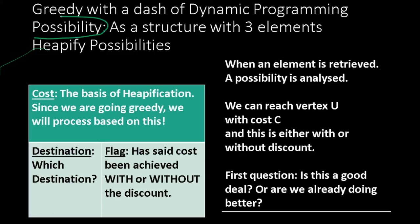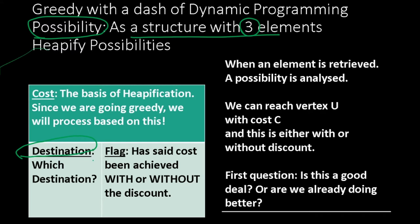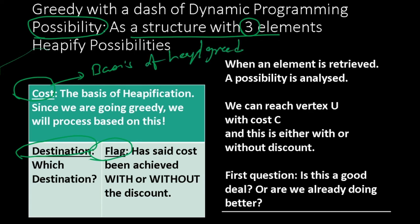Let's get formal. A possibility is a structure recording three aspects: first, the destination — which vertex will this package take us to; second, a flag — does the package involve giving away our coupon (coupon used) or preserving it; third, the cost — this is the basis of heapification. We process the cheapest cost first. In other words, this package means: we can reach vertex U with cost C, either with or without discount based on the flag.